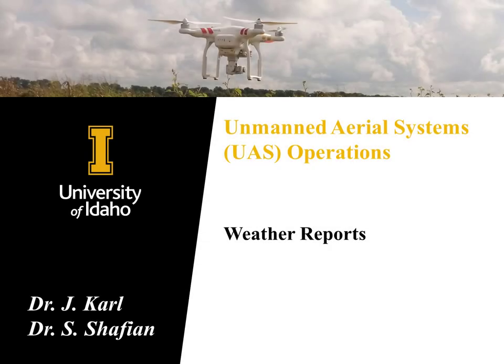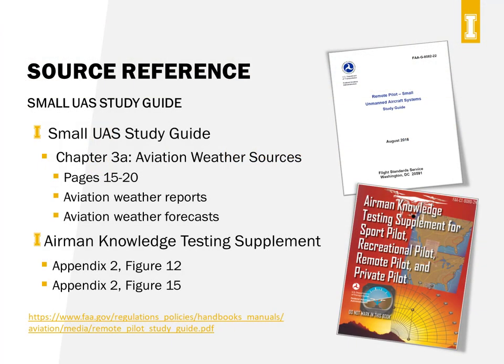In this lecture, we'll be talking about aviation weather reports and what information you need to know for your Part 107 Remote Pilot exam. If you've got a copy of the FAA Remote Pilot Study Guide, the information for this lecture is mostly coming from Chapter 3A on Aviation Weather Sources, pages 15 to 20. You should also take some time to get familiar with the weather report examples in the testing supplement document — figures 12 and 15 in Appendix 2 — as these examples often show up on your Part 107 exam.